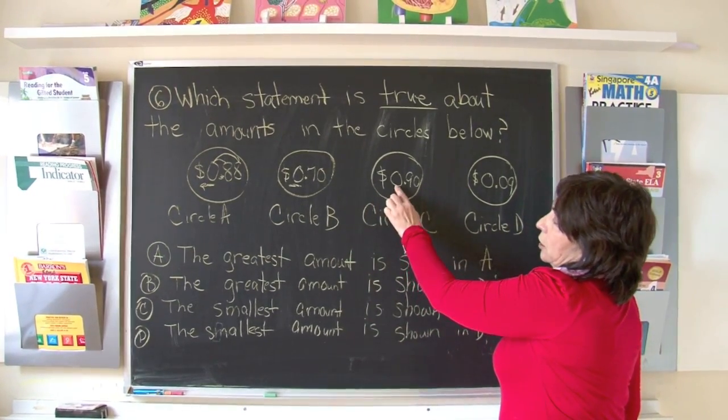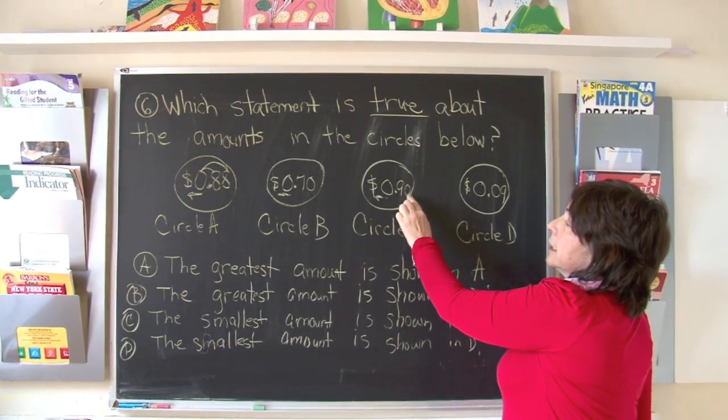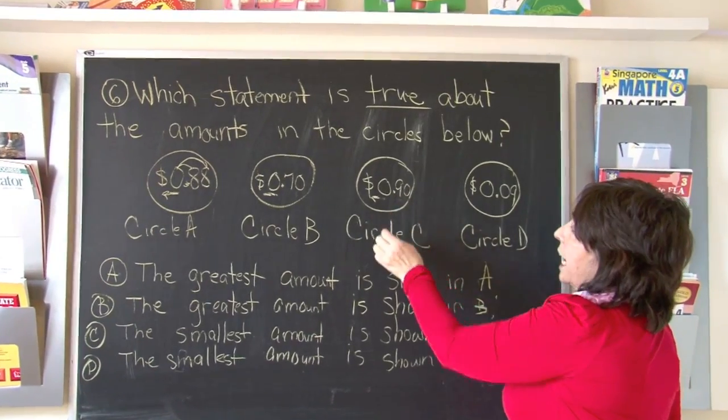Circle C. No dollars, no whole numbers. Nine tenths and zero hundredths. Ninety cents.